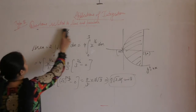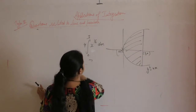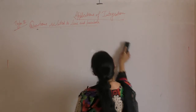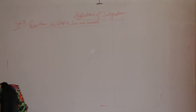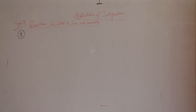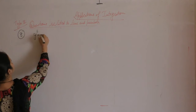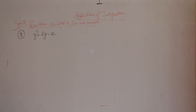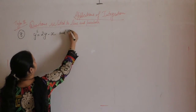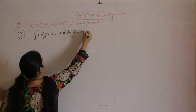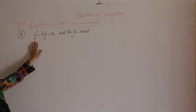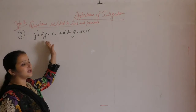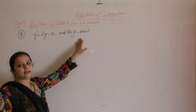Now the next one is: find the area of the region bounded by the curve y² = 2y − x and the y-axis. The previous question was along the x-axis; now the questions are along the y-axis.